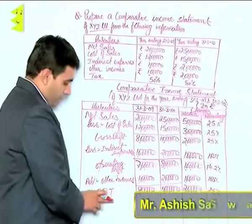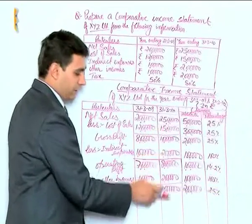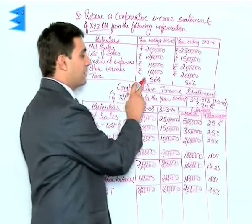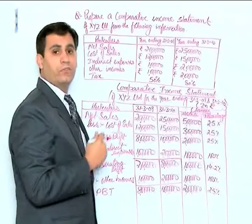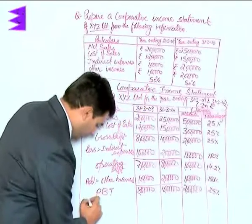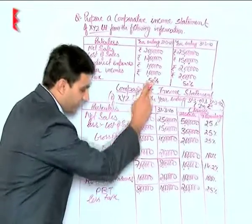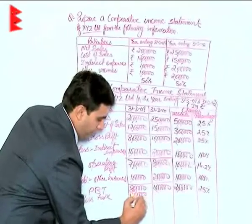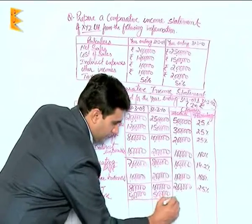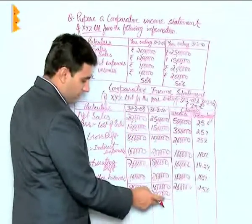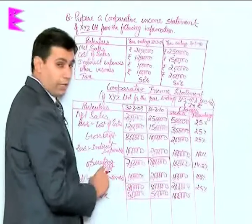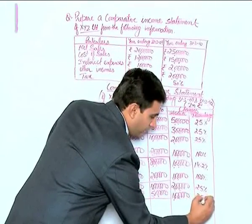Profit before tax is 8 lakhs for the previous year and 10 lakhs for the current year. Tax is given as a percentage, calculated on profit before tax. For the first year, the rate of tax is 50 percent of 8 lakhs, which is 4 lakhs. For the second year it is 5 lakhs. The absolute change is 5 lakhs minus 4 lakhs, which is 1 lakh, and the percentage change is 1 lakh divided by 4 lakhs into 100, which is 25 percent.